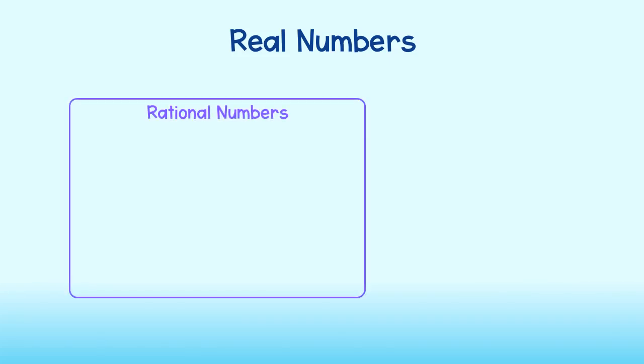But first, what is a real number? Real numbers are made up of rational and irrational numbers.